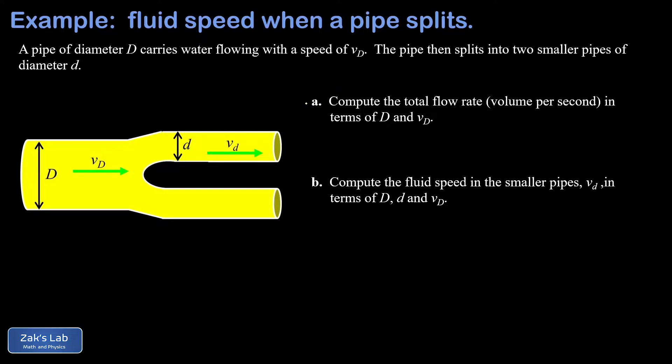First we want the total flow rate, in other words volume per second, in terms of the large diameter part of the system. And then in part b we want to express the fluid velocity in the smaller pipes in terms of the large diameter, the small diameter, and the fluid speed in the large diameter part.